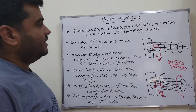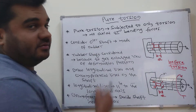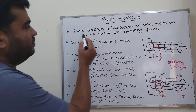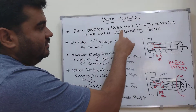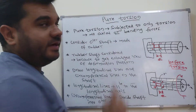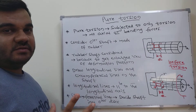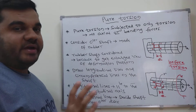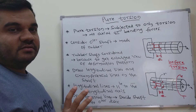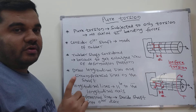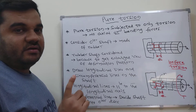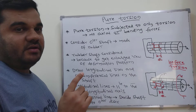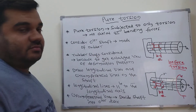Here we will discuss about pure torsion. Pure torsion is when a shaft is subjected to only torsional type of forces or couple — no axial forces, no bending forces. When it is subjected to only torsional forces or couple, then it is called pure torsion.